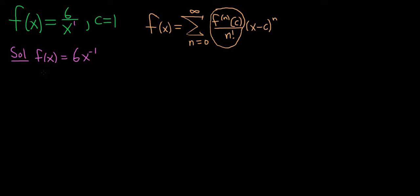Now let's start differentiating. So f prime of x, using the power rule, you bring down the negative 1, so you get negative 6x to the negative 2. And let's do it again, so f double prime of x is equal to 12x to the negative 3. And let's do it again. So f triple prime of x is negative 36x to the negative 4. Let's stop there.